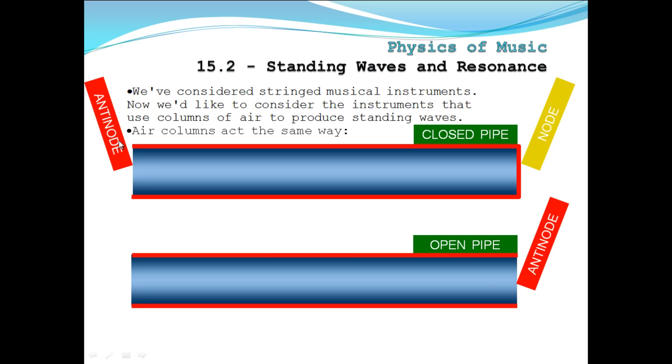So anywhere there's an open end, we're going to have anti-nodes. So on the closed pipe, the open end is an anti-node. And both ends of this open pipe are anti-nodes. So we're going to shoot some air in here. And here's what the wave is going to look like.